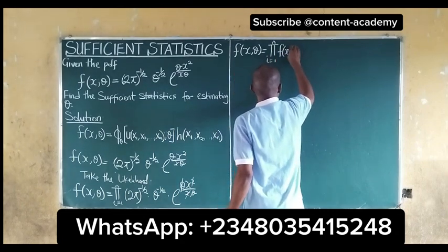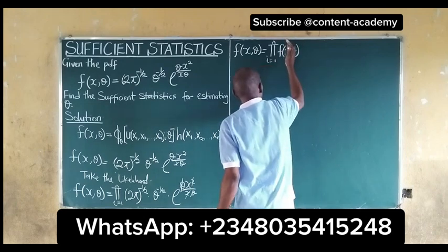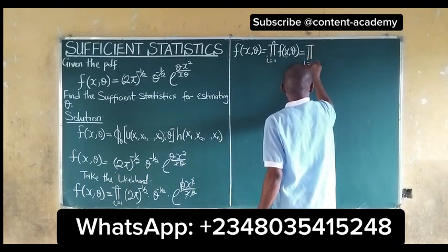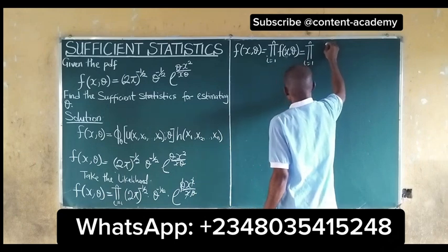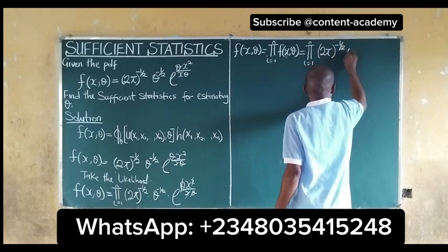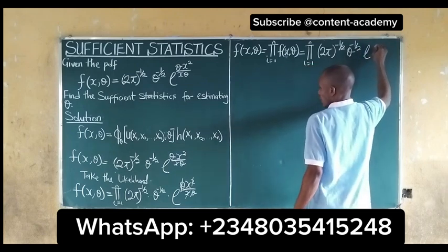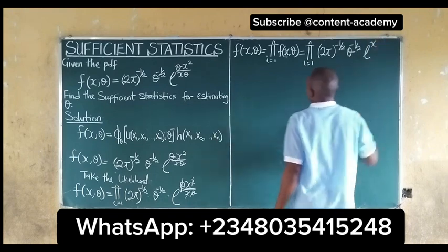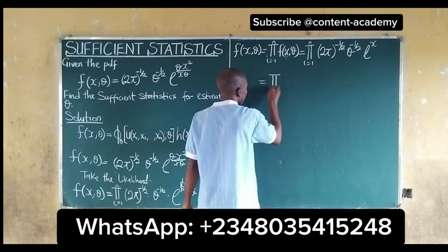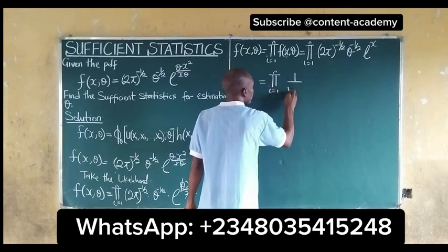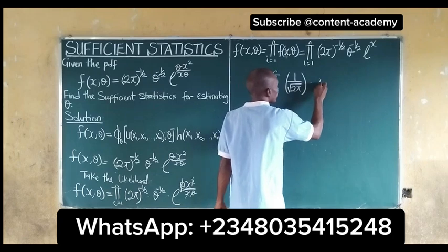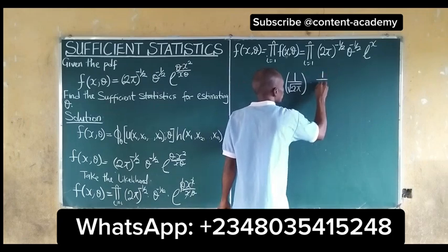The product sum of f(x, θ) — which we can now write as the product sum of (2π)^(1/2) · θ^(1/2) — can be written properly as 1 over √(2π) multiplied by 1 over √θ, multiplied by exp(x).